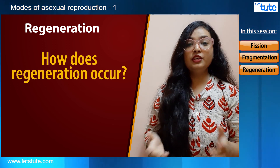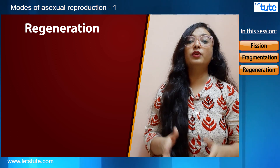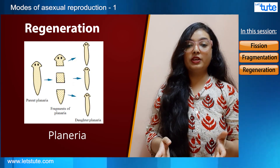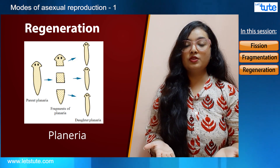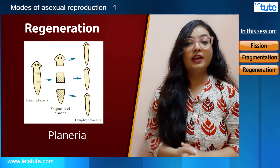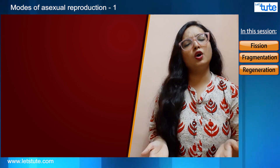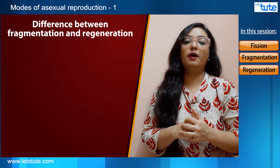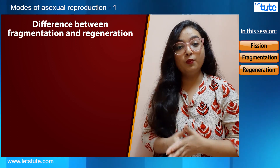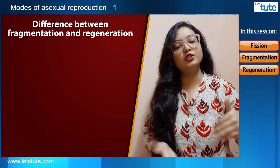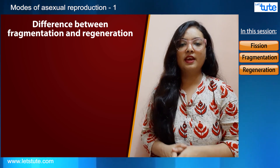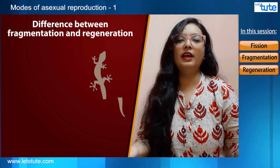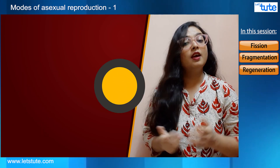Regeneration occurs because of specialized cells. Planaria, a very simple organism, uses regeneration to reproduce asexually when it is cut into many pieces. Now, what is the difference between fragmentation and regeneration? In fragmentation, each divided segment grows to form a completely new organism. Whereas in regeneration, the organism that loses its part has the ability to grow that part back. That is the basic difference between these two methods.